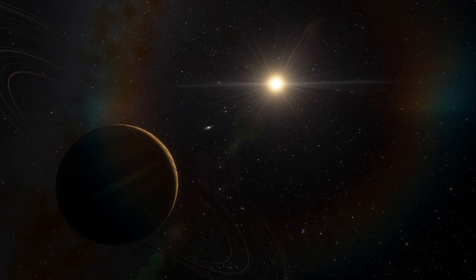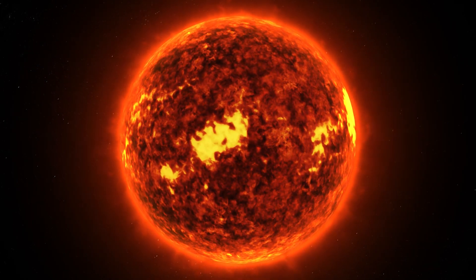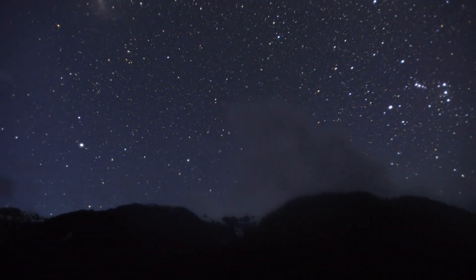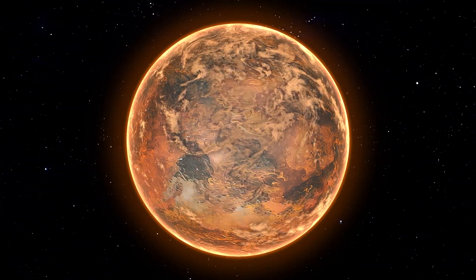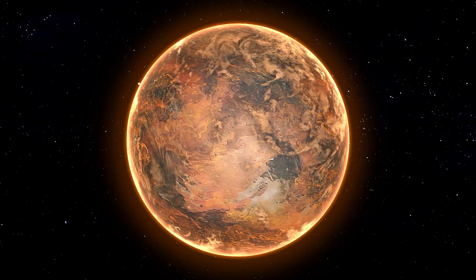Most super-Earths orbit cool dwarf stars, which are lower in mass and live much longer than the Sun. There are hundreds of cool dwarf stars for every star like the Sun, and scientists have found super-Earths orbiting 40% of cool dwarfs they've looked at.